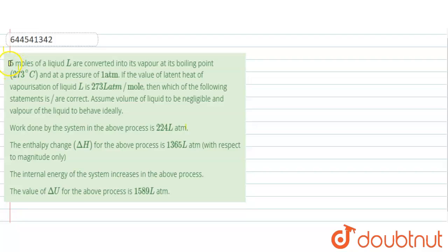Our question is: Five moles of a liquid L are converted into its vapor at its boiling point 273°C and at a pressure of one atmosphere. If the value of latent heat of vaporization of liquid L is 273 liter atmosphere per mole, then which of the following statement is correct? Assume volume of liquid to be negligible and vapor of liquid to behave ideally.